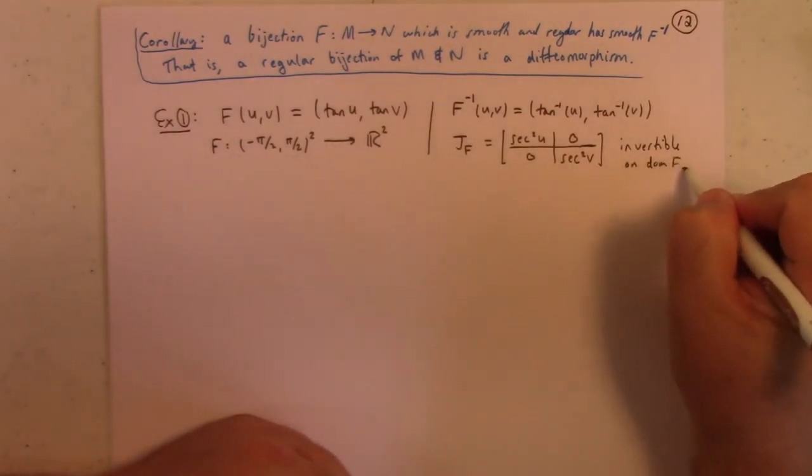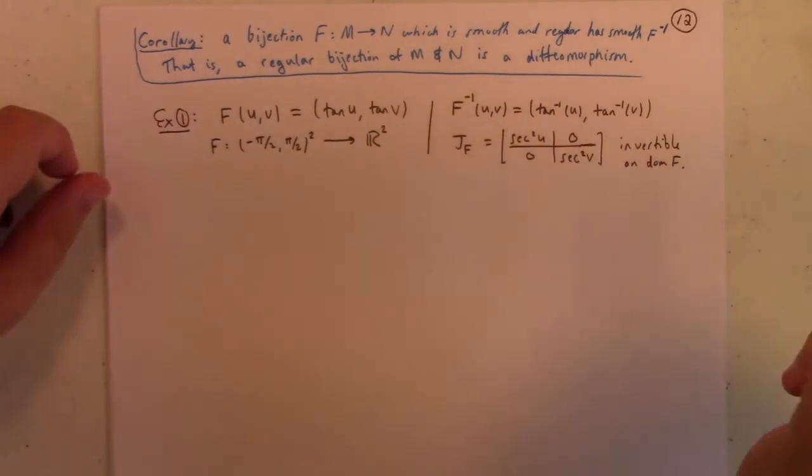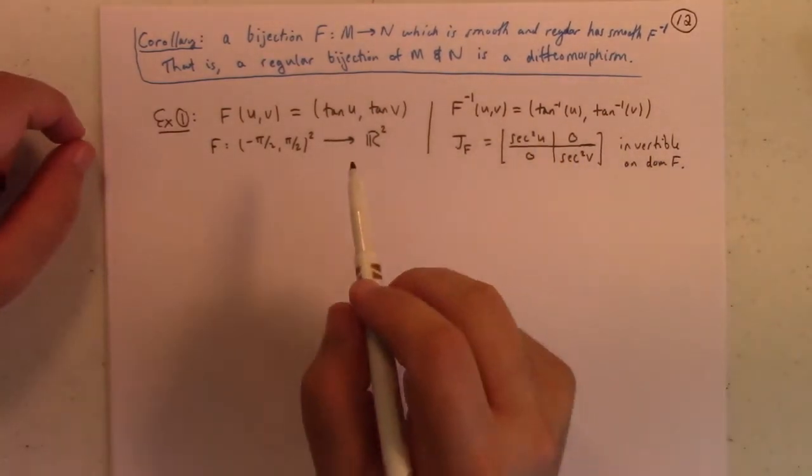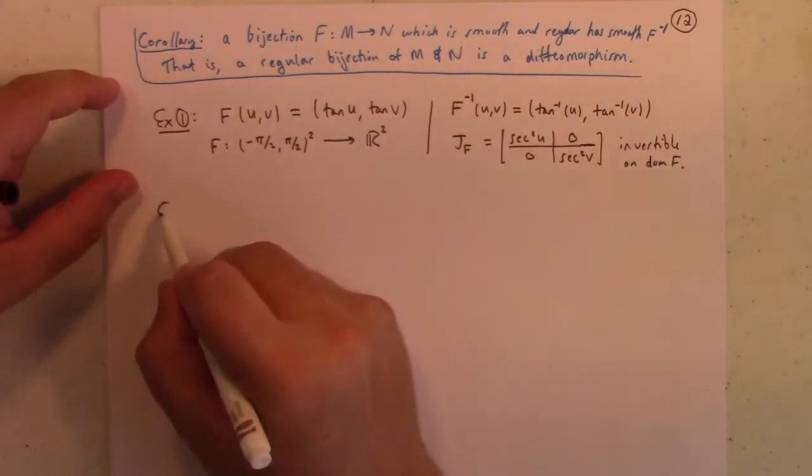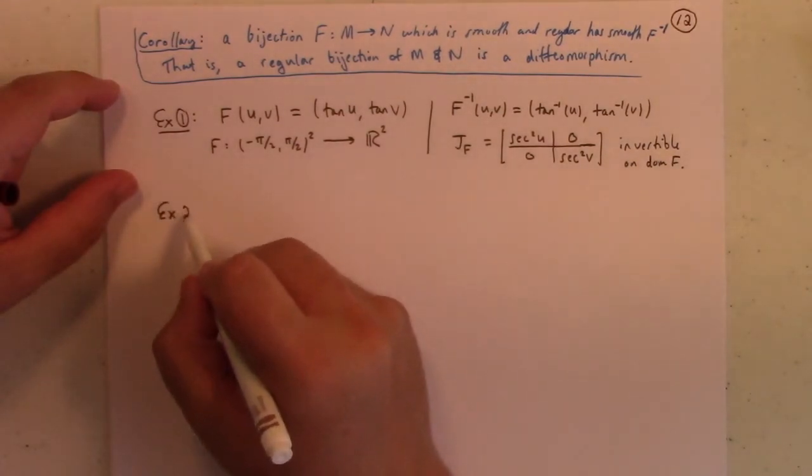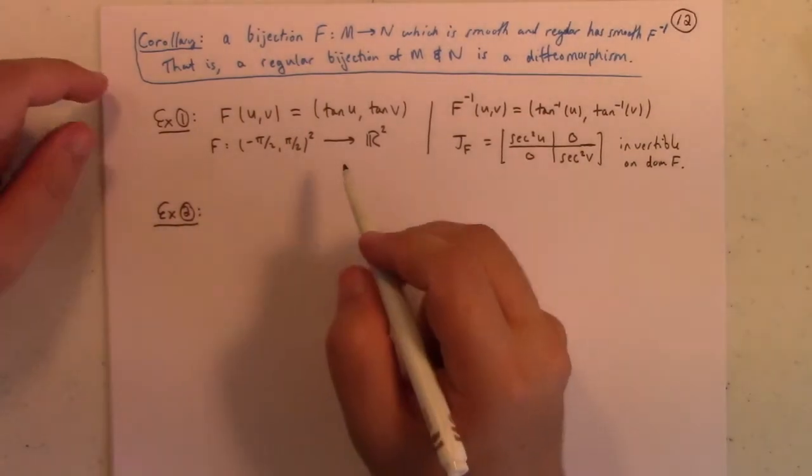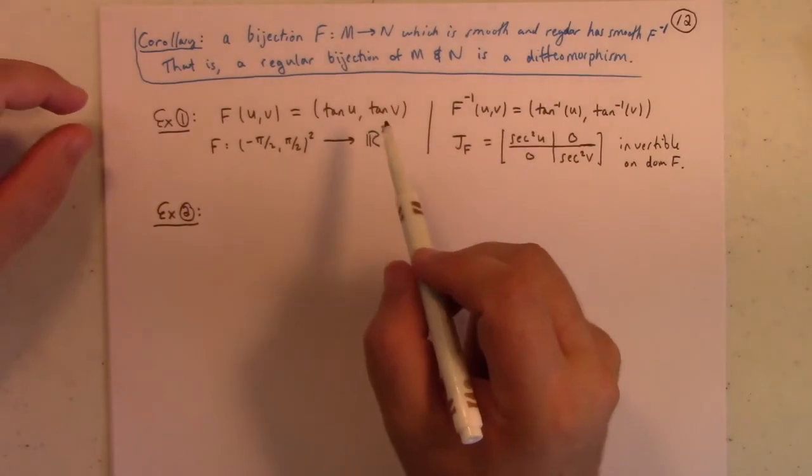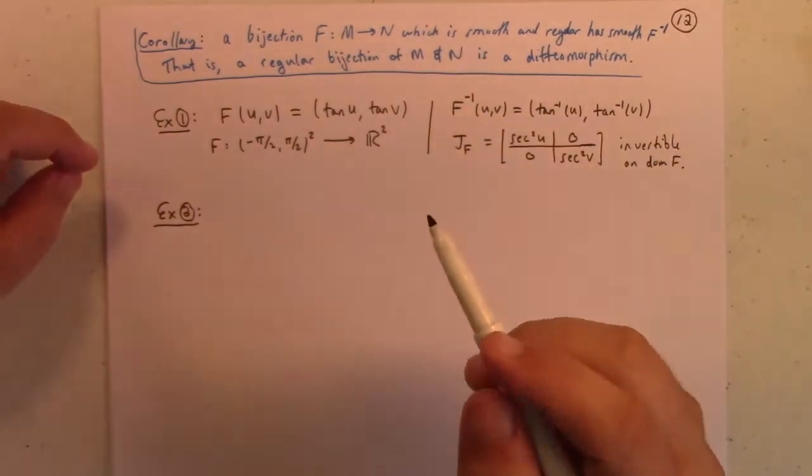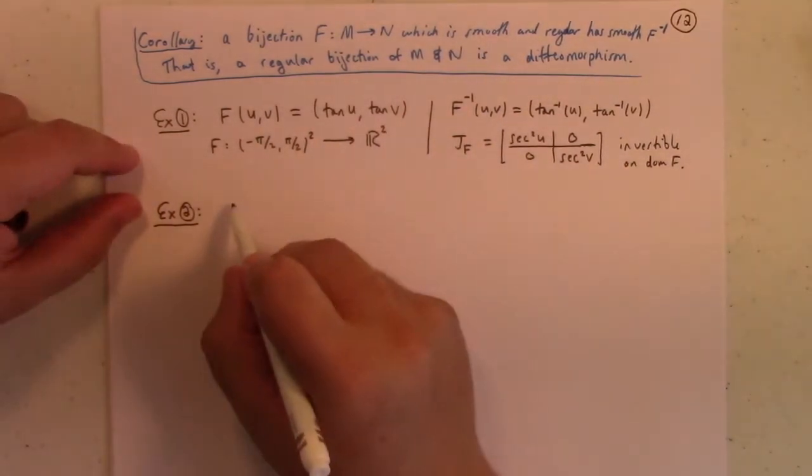The domain of f. All right. So, there you go. That's a diffeomorphism of an open rectangle and the plane. So, certainly, diffeomorphism has no sense of size, right? It took you from something with area pi squared to something with area infinity. Okay. So, anyway, let's see here.